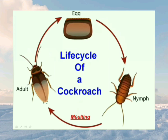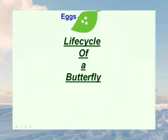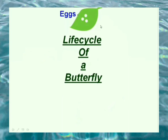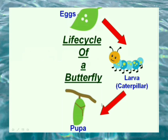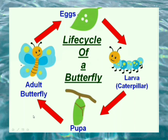A nymph becomes an adult cockroach after many moltings. The four stages in the life cycle of a butterfly are egg, larva, pupa, and adult. The young one which hatches from the egg looks quite different from the adult butterfly — it looks like a worm and is called a larva. The larva of the butterfly is known as a caterpillar. It feeds on leaves and grows rapidly. After some time it covers itself in a cocoon and is now called a pupa. Finally the cocoon bursts and the adult butterfly comes out.